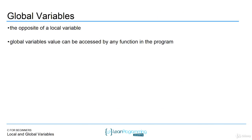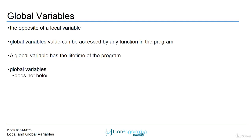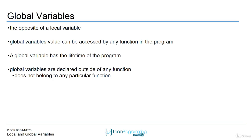Global variables are the opposite of local variables — they can be accessed by any function in the program. To create a global variable, you put it at the top, outside any function. Global variables are declared outside of any function and do not belong to any function. Remember, main is a function, so variables defined in main are only accessible in main. If you want a variable used by all functions, put it outside of any function, usually at the top of the source file.